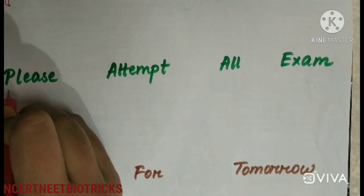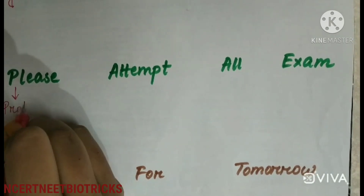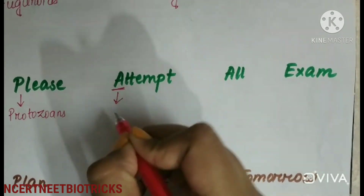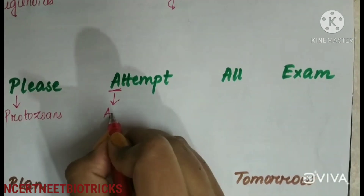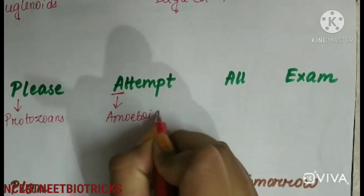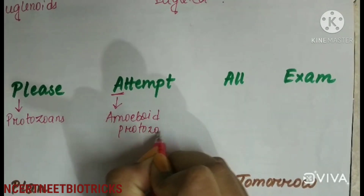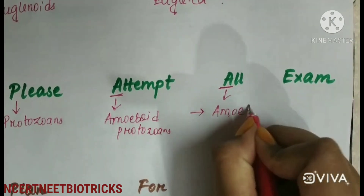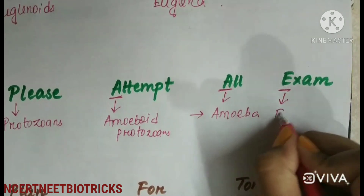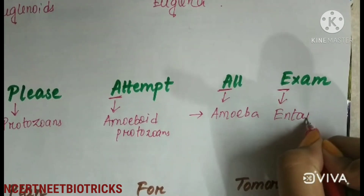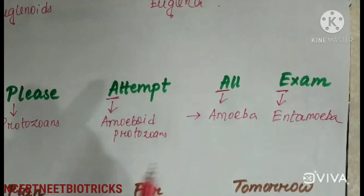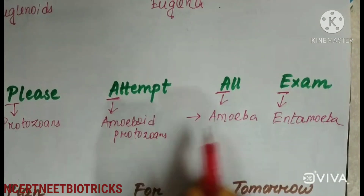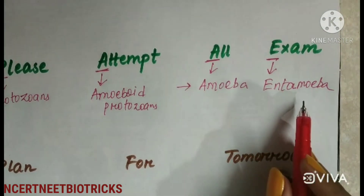The mnemonic 'please attempt all exam' helps remember Amoeboid Protozoans. P for Protozoans, A for Amoeboid Protozoans. Examples are A for Amoeba and E for Entamoeba.